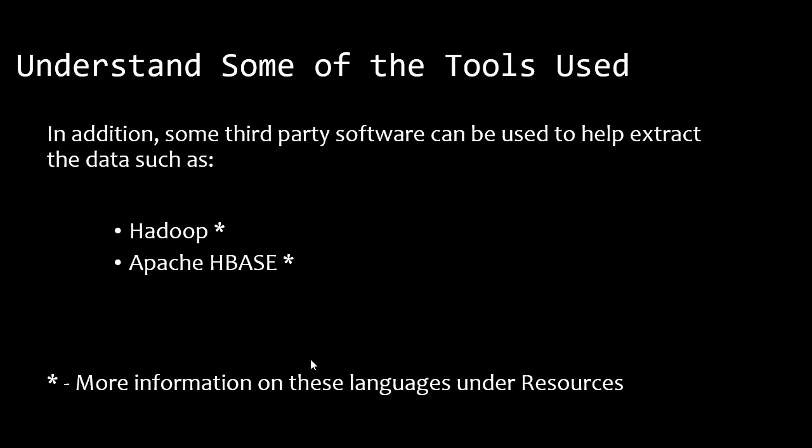There's also third-party software out there — Hadoop and Apache HBase. These are platforms that allow you to go in and really cleanse the data, look at the data, break apart the data, data mine the data, and so on. Very complex and wonderful pieces of software and platforms to help you do this. Both of them are basically from Apache. I provided resources for you to go read a little bit more about them and understand what they do. These are platforms to help us see the data, break it apart, and get it ready for analysis.